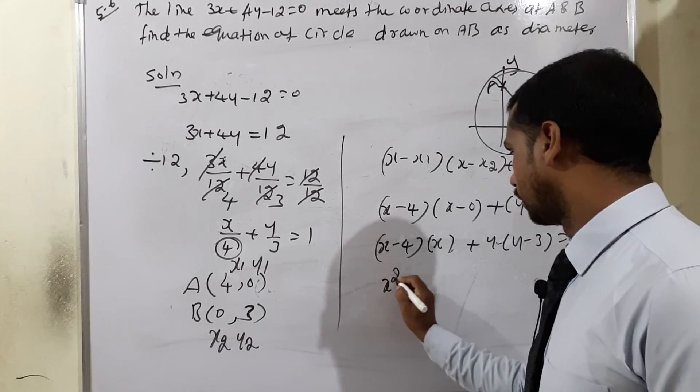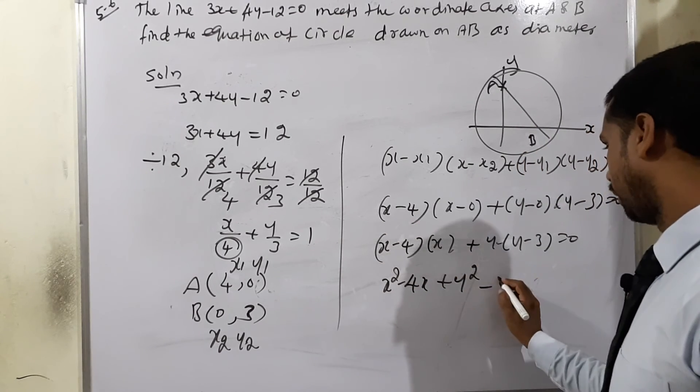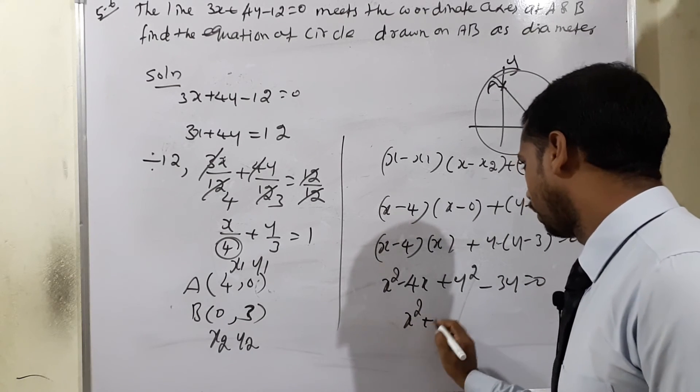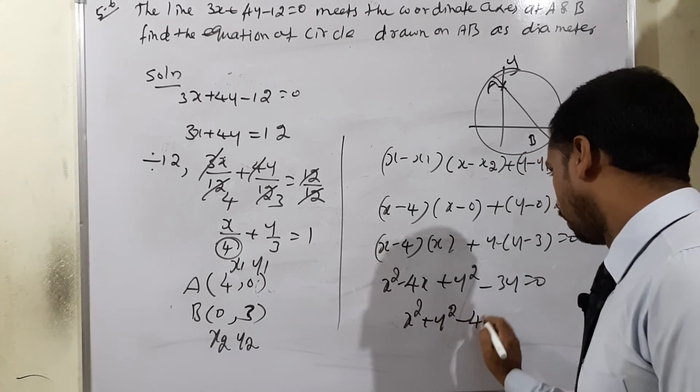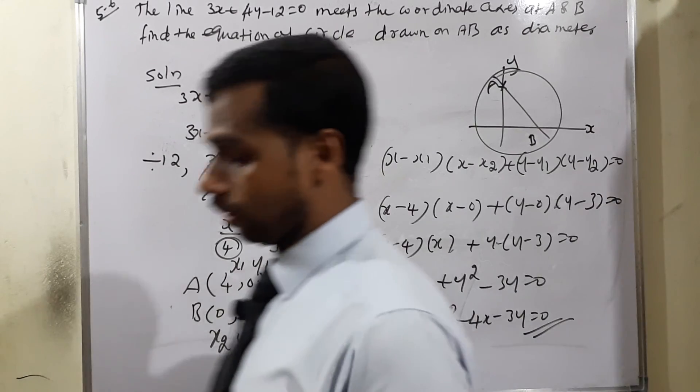So x into x is x squared minus 4x plus y squared minus 3y equals 0. In order, x squared plus y squared minus 4x minus 3y equals 0. This is the answer for example 5.6.